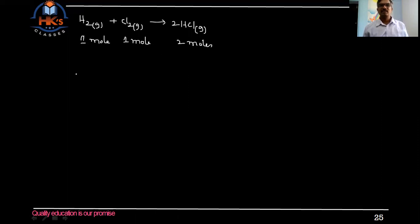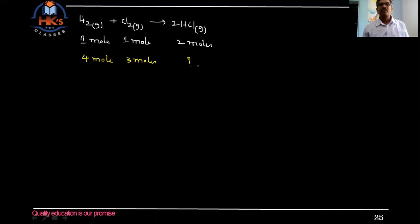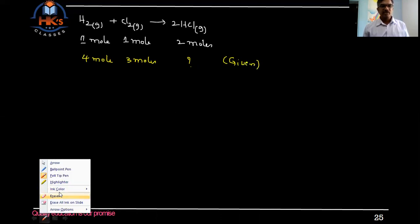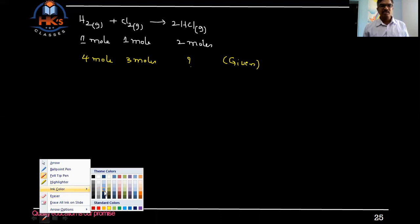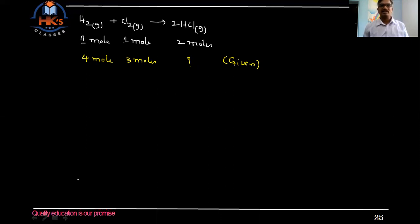Suppose in the data they have given: four moles of hydrogen and three moles of chlorine. The question is to find the number of moles of HCl produced. Now, first of all you need to identify what is the limiting reagent and what is the excess reagent.